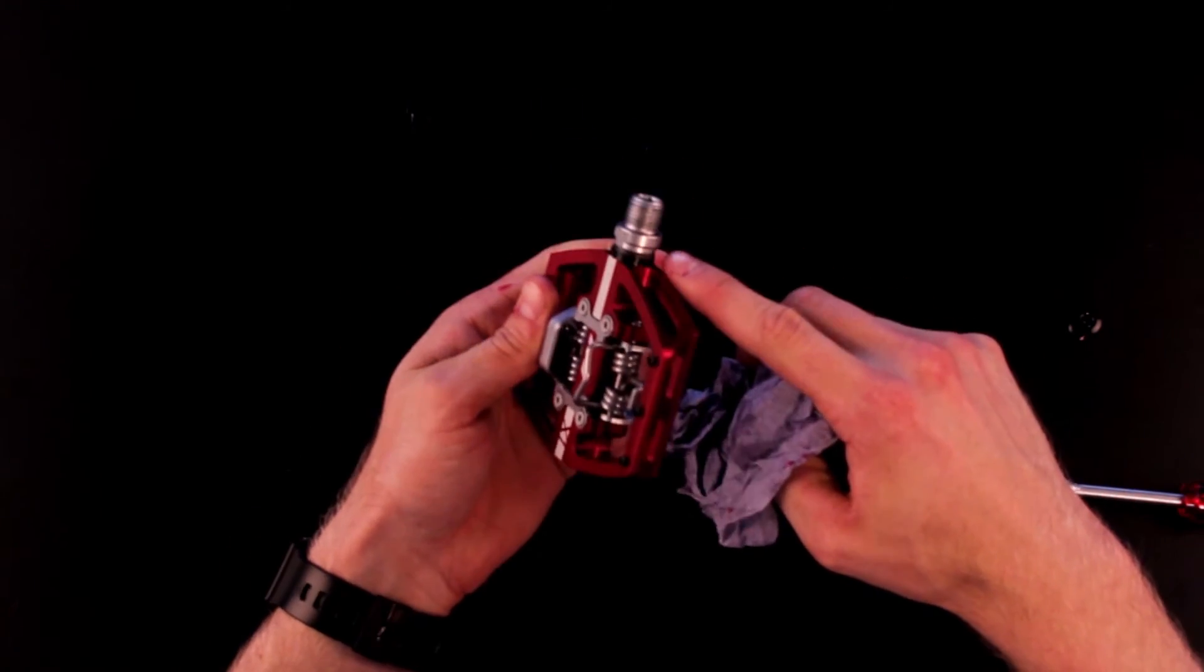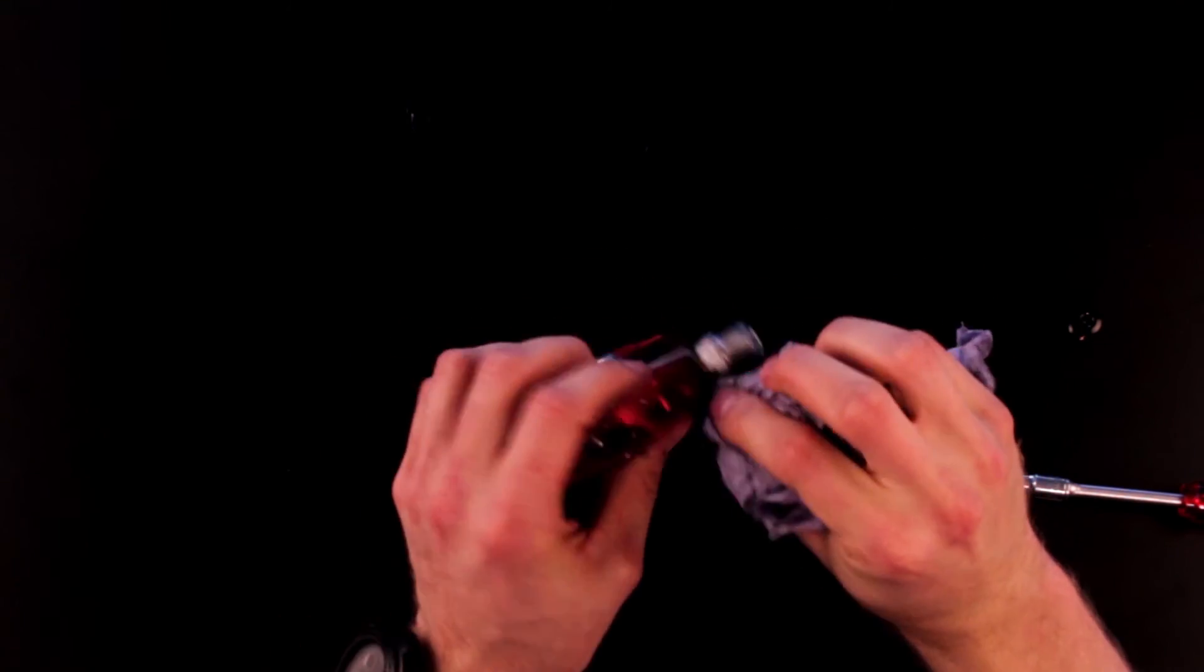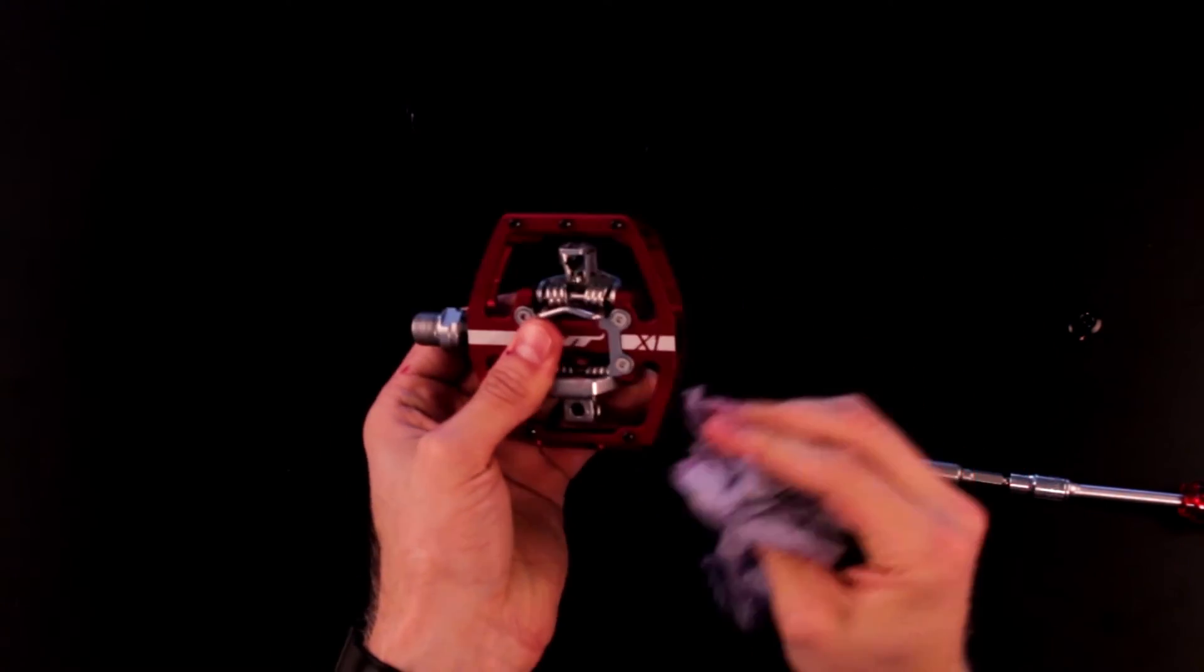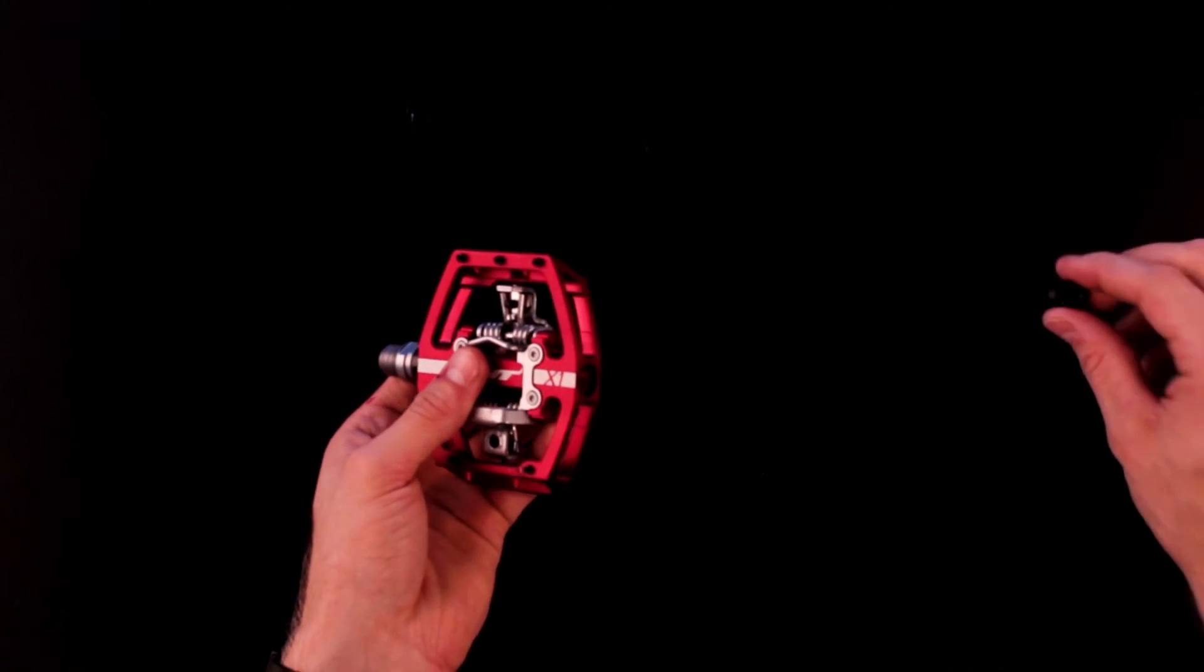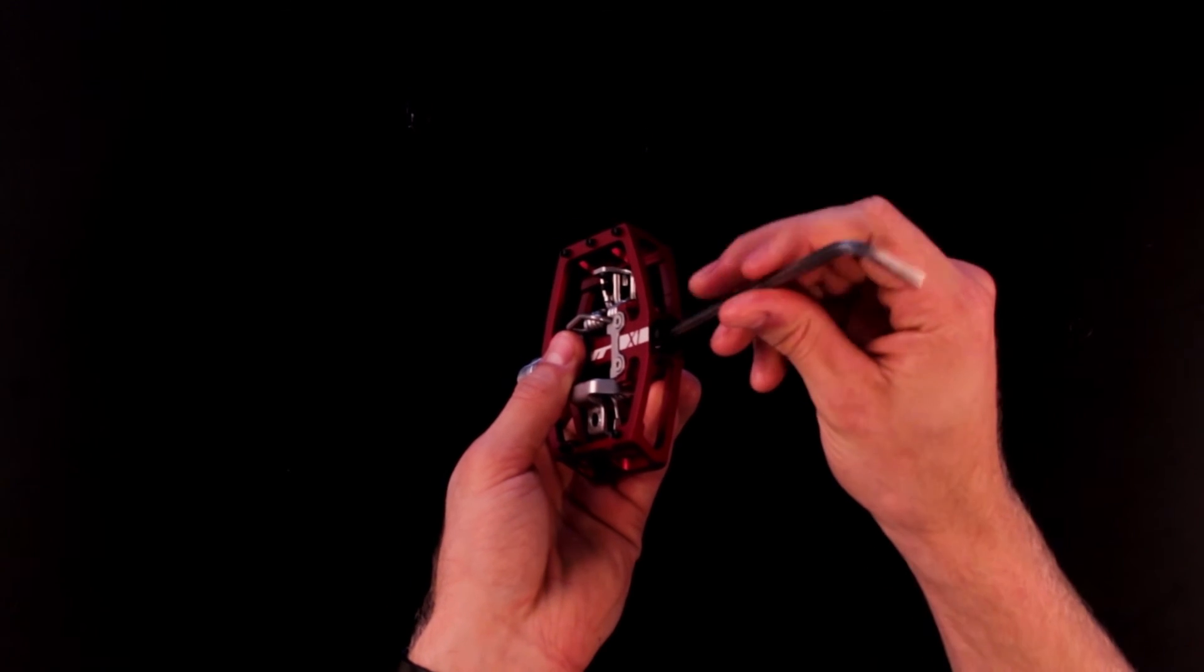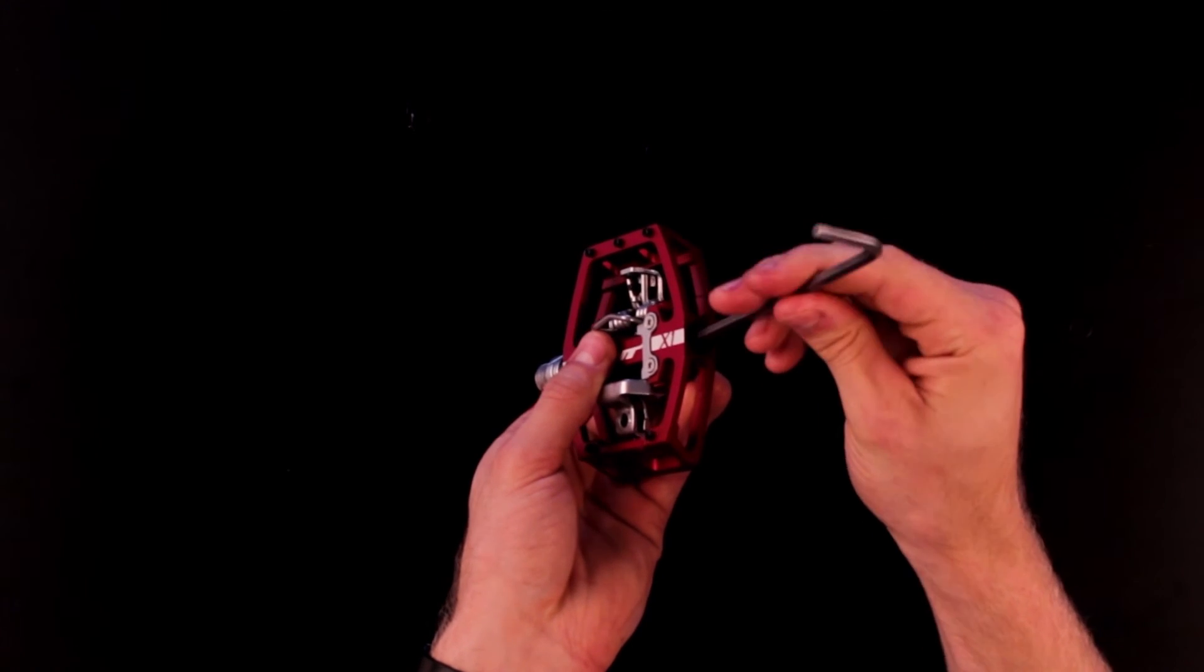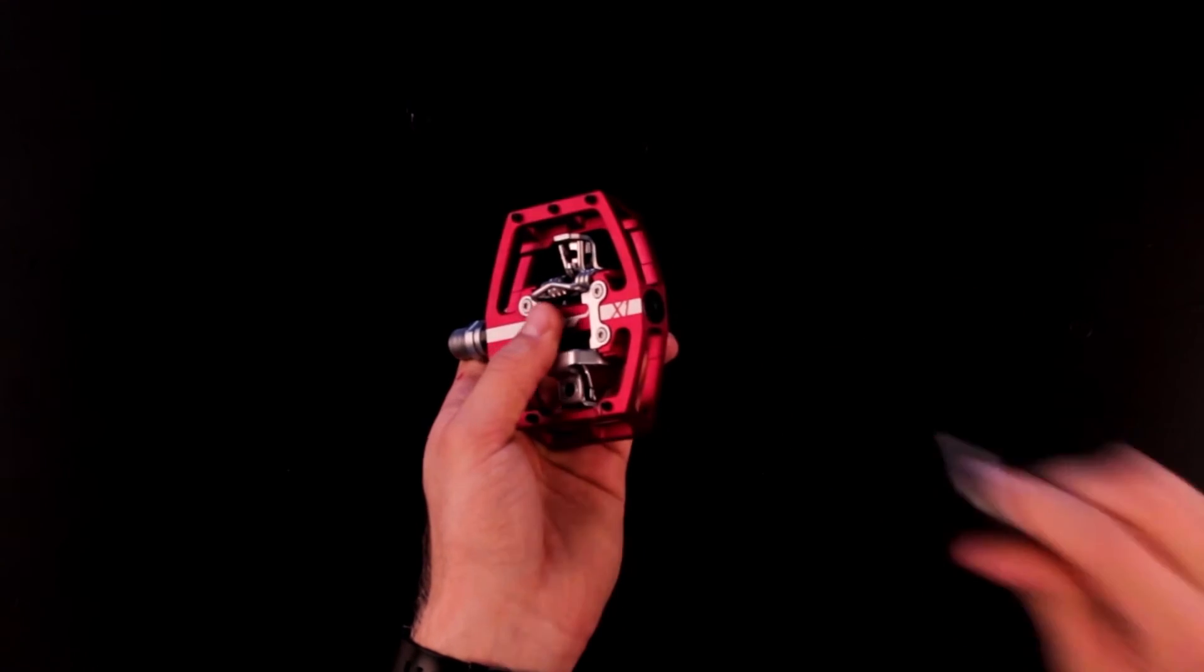Now we'll wipe off any excess grease left. This will stop any dirt sticking to the pedals when you're out on the trails. Now all that's left is to reapply the end cap. Again with the 5mm Allen key, just slightly nip it up to stop any dirt working its way into the pedal.